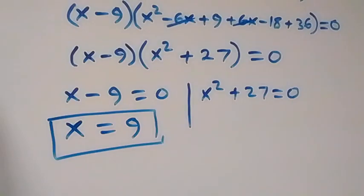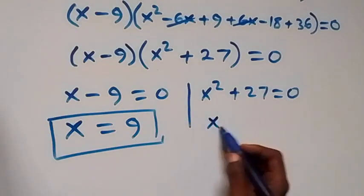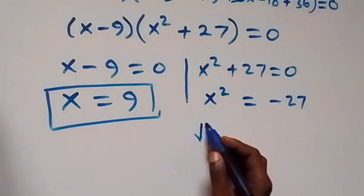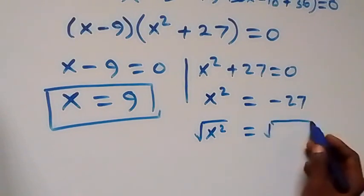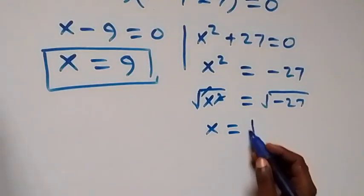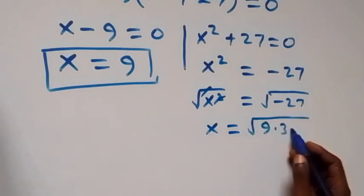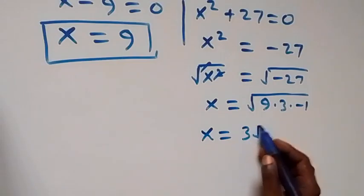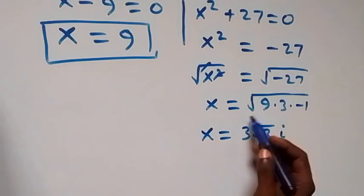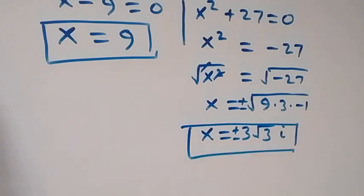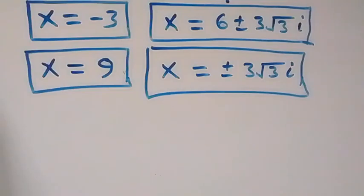For x² + 27 = 0, we get x² = −27. Taking the square root: x = ±√(−27) = ±√(9 · 3 · (−1)) = ±3√3 i. So we also have two complex solutions from the second case.